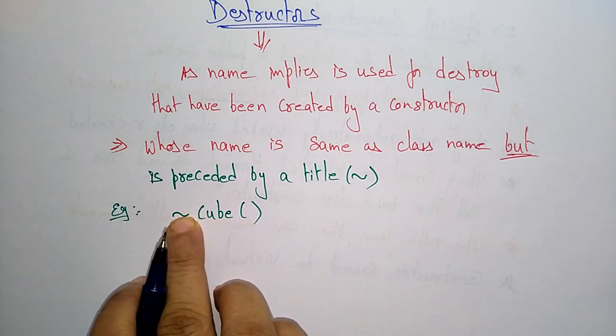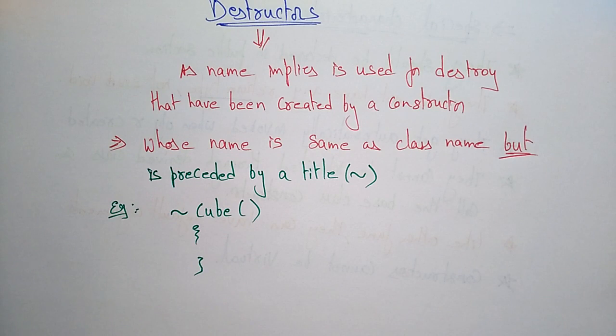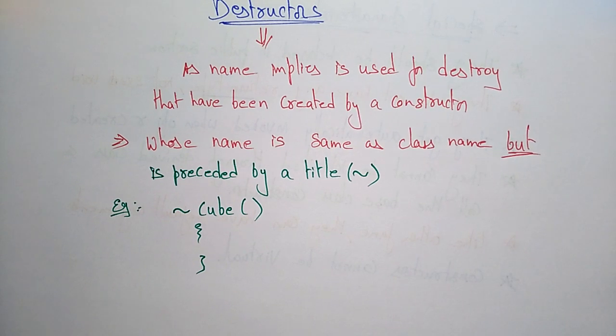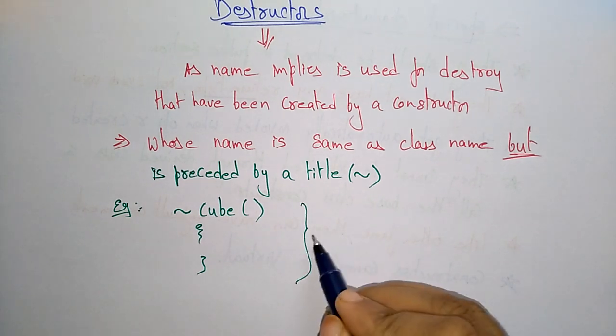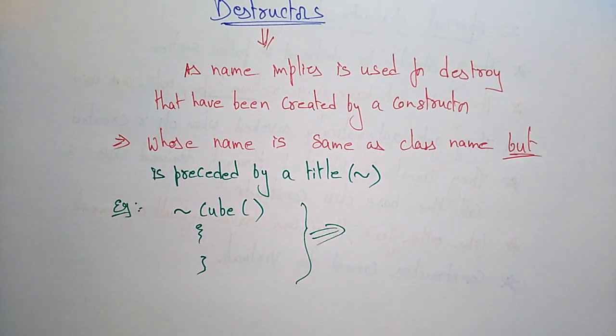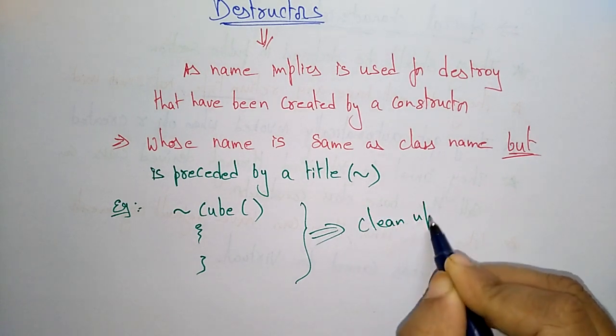The destructor neither takes an argument nor returns any value, and the compiler implicitly invokes it upon the exit from the program. So here the program is for cleaning up storage that is no longer accessible. Why we are using this destructor? To clean up the storage.